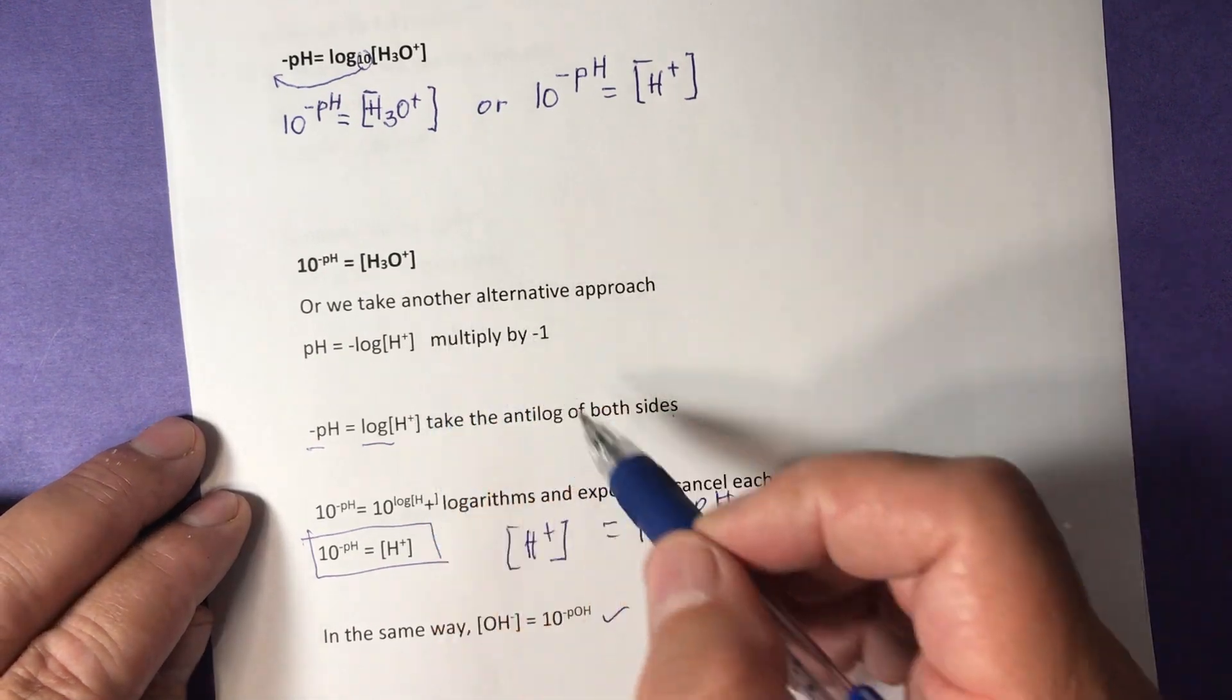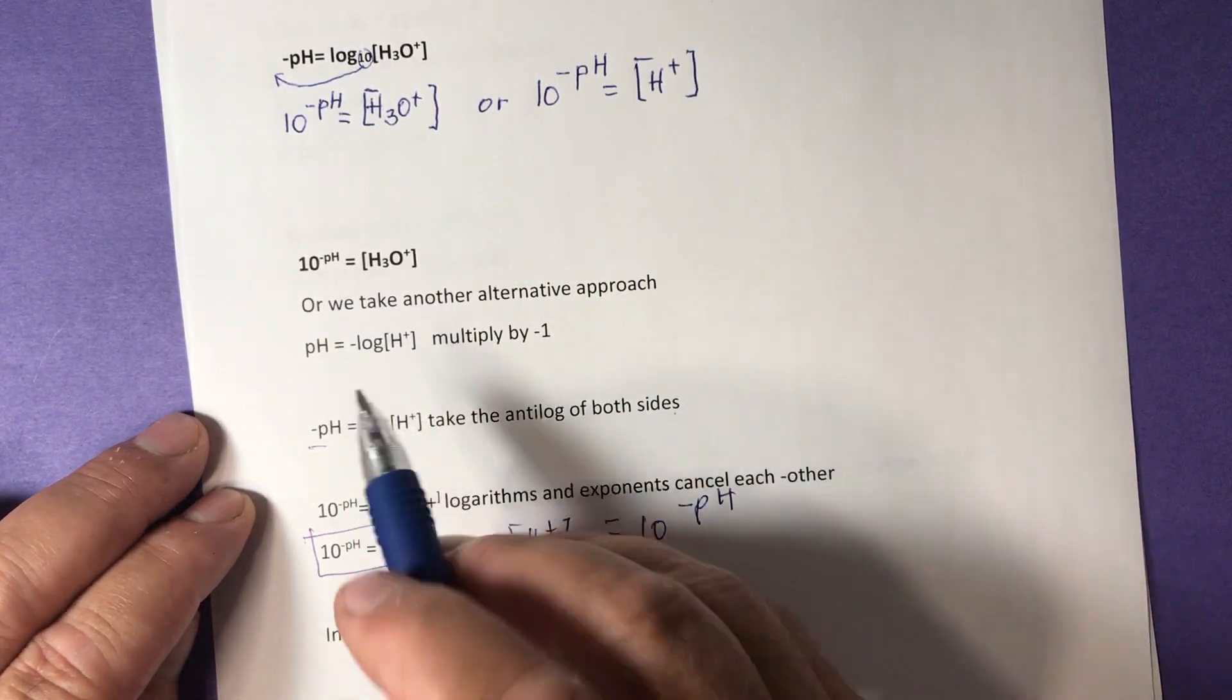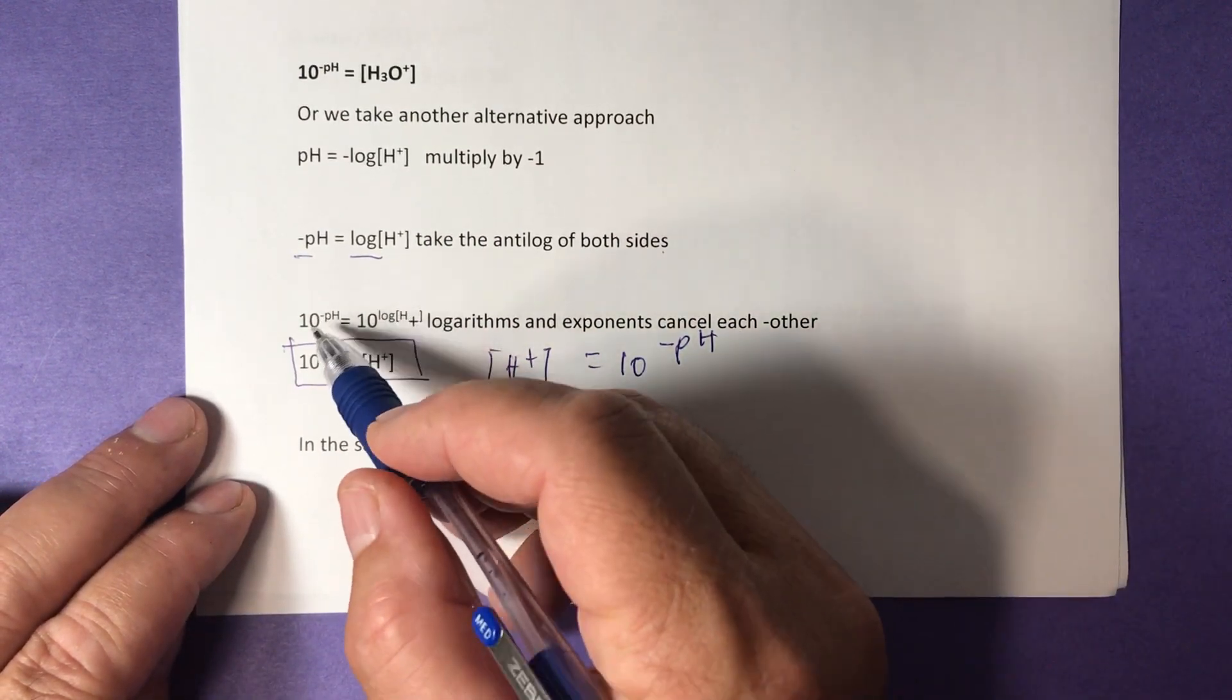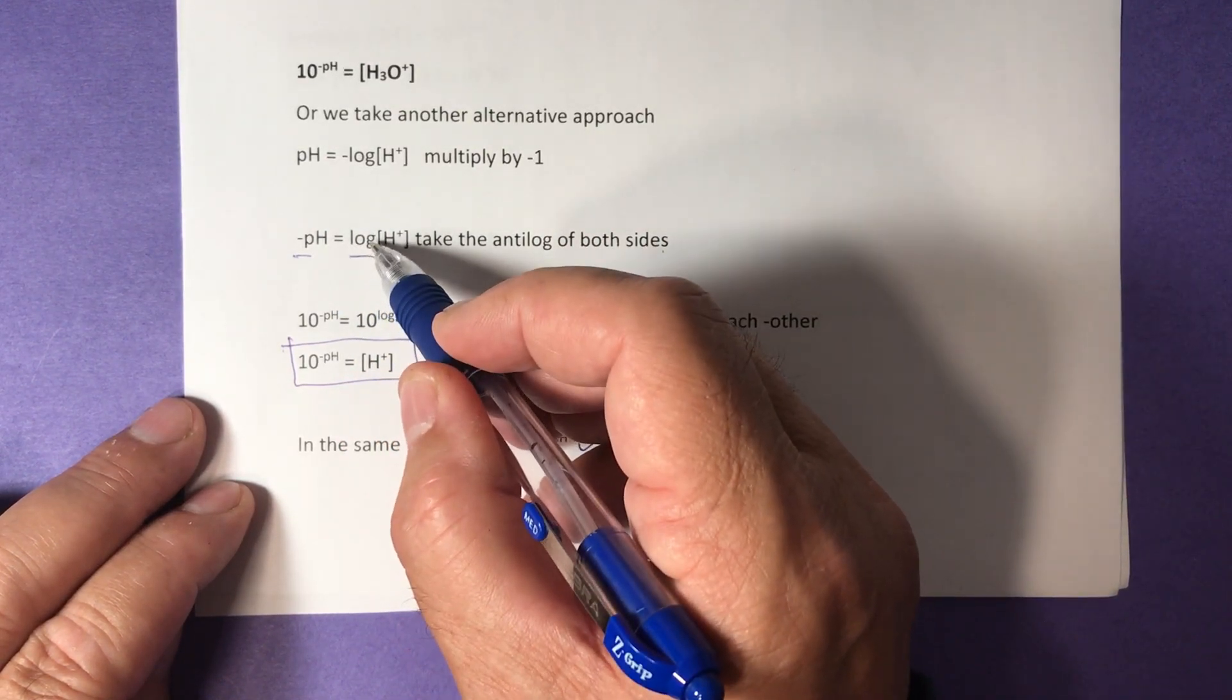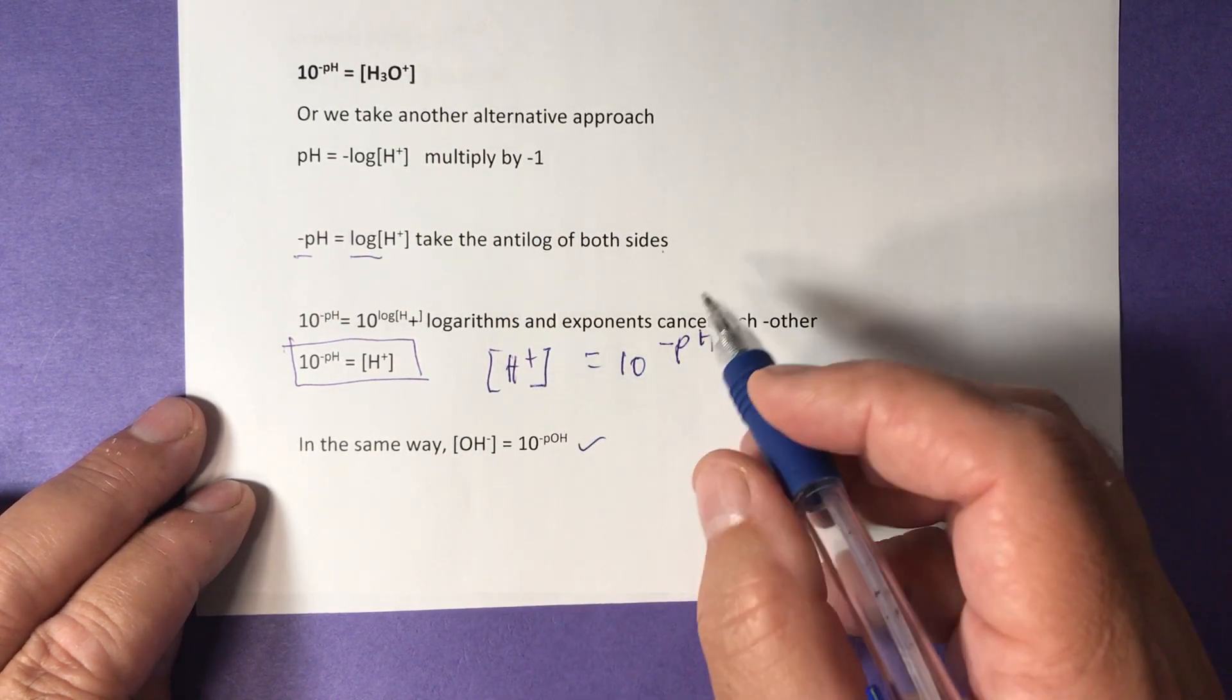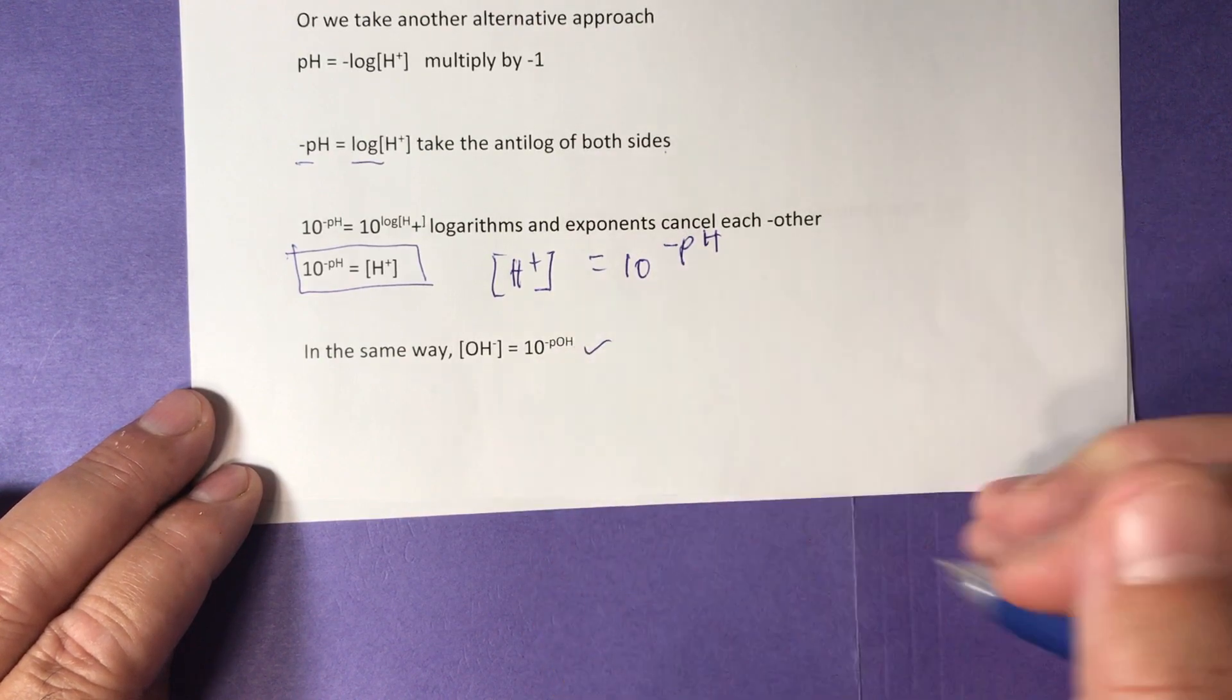We can take another approach to solve for that. We multiply by negative 1 here, and we get negative pH equals log of H+. Take the anti-log of both sides, and we have 10 to the power of negative pH equals 10 to log of H+. Logarithms and exponents cancel each other, and we have at the end hydrogen ion concentration equals 10 to negative pH. In the same way, OH minus concentration equals 10 to negative pOH.